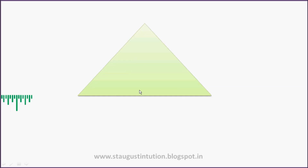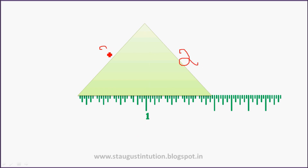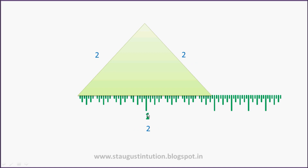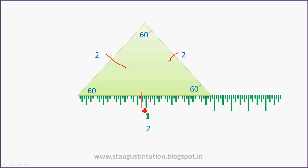Let's consider a triangle with 2 units on each side — 2, 2, 2. This is 60 degrees, 60 degrees, 60 degrees. If all 3 sides are equal, then it is an equilateral triangle. The sum of angles is 180 degrees, so each angle is 60 degrees.